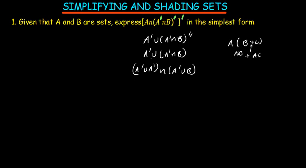So A complement union A complement — what is outside A together with what's outside A is simply A complement. Then we have intersection A complement union B. Now this will not give us the simplest form directly. The best way to make sure we get it right is to use a sketch.